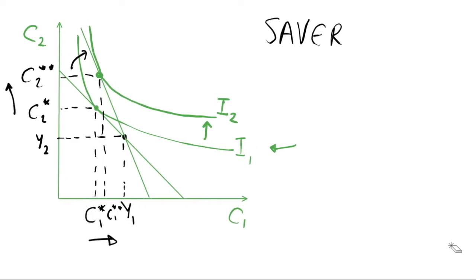The substitution effect says that when we change the interest rate — in this case increasing it — we are changing the relative price of consumption in two different periods. We think of the interest rate as the price of deferring income from period one to period two, or the price of borrowing where we defer our period two income into period one. When we change the prices of two things, we are going to substitute from one good into the other. In this case we substitute across time.